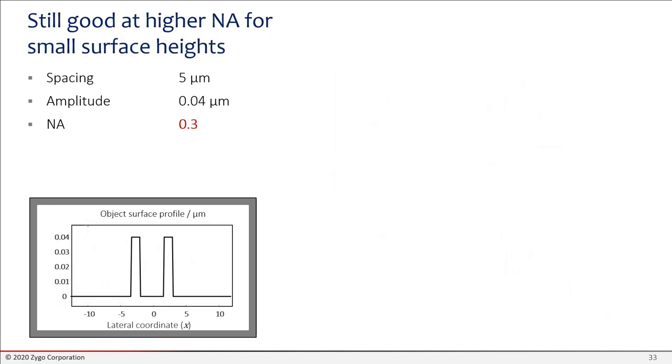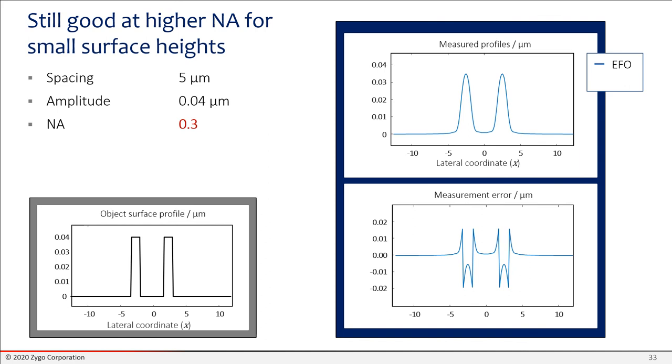The results look still good at a higher NA as long as the surface heights are pretty small. So here we have a numerical aperture of 0.3 and we've got two posts and they're short posts. They're 40 nanometers tall. And what we see with the EFO modeling is that these posts will not be perfectly rendered in a measured topography that you would expect. They're a little bit blurred. And if you overlay the results from the three-dimensional model, the more realistic model, you see again very good agreement. So that's great. So at a larger NA, as long as the surface heights are small, we're in good shape.